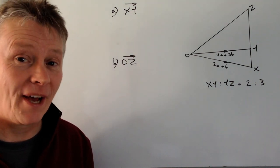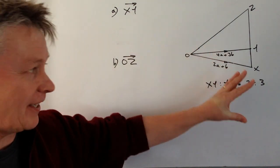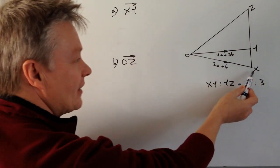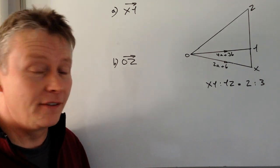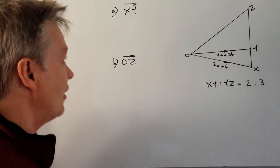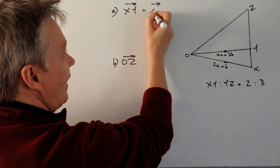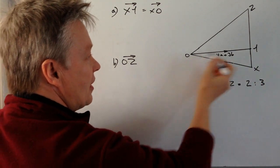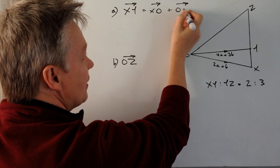Hi and welcome to 3 Minute Maths. In this video we're going to be looking at a vector problem where we've been asked to calculate the vector XY. We don't know anything about XY directly, but we can go around the houses — vector XO along here, and then from O to Y, so plus vector OY.